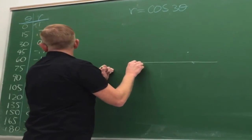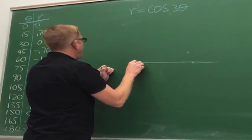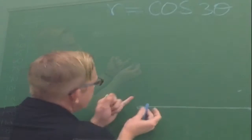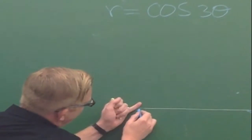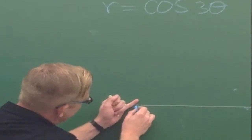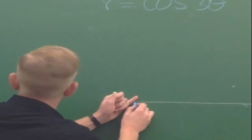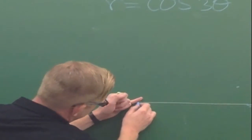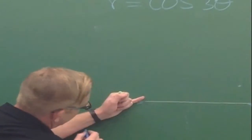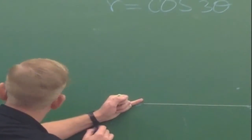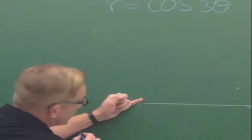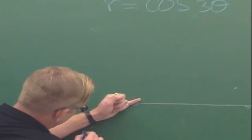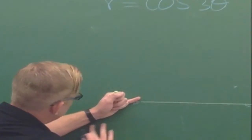And then when theta is 45 degrees, I see that I'm facing this way but my r is in the negative direction. So at 45 degrees, my r is out 0.7 in the negative direction — I'm going backwards.